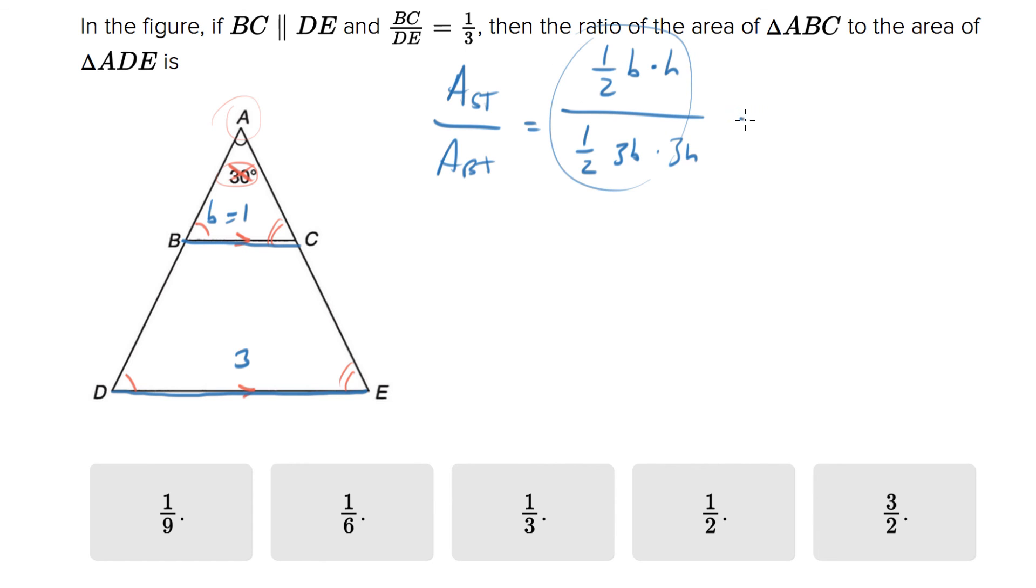That's it, that is the ratio right here. We just need to simplify it. Let's go through and figure out what cancels out. The one-halves cancel out, the b's cancel out, and the H's cancel out. All that we're left with is one over three times three, which is equal to one ninth.